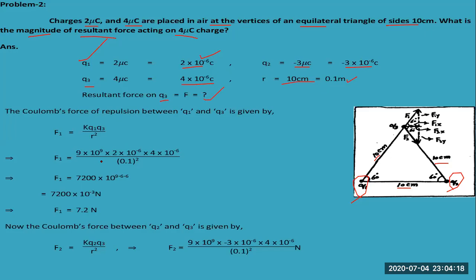We are asked to find out the resultant force on charge q3. First we calculate force F1 using the formula: F1 = k × q1 × q3 divided by r squared. After putting in the values, F1 comes out to be 7.2 newtons. This is the Coulomb force between q1 and q3.